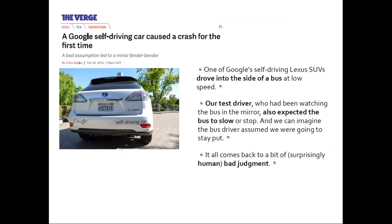The car saw that there was a bus approaching from behind on the second lane, which it wanted to enter. It judged that the bus was far enough behind and expected the bus driver to slow down a little to let it proceed with the maneuver. There was also a human test driver sitting in the Google self-driving car, just observing and able to take over control. The test driver made the same judgment — that the bus should slow down. But the bus driver, seeing the self-driving car, did not slow down, and so the self-driving car crashed into the side of the bus.